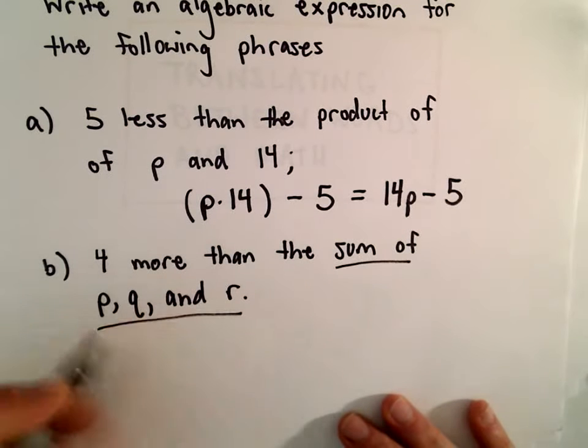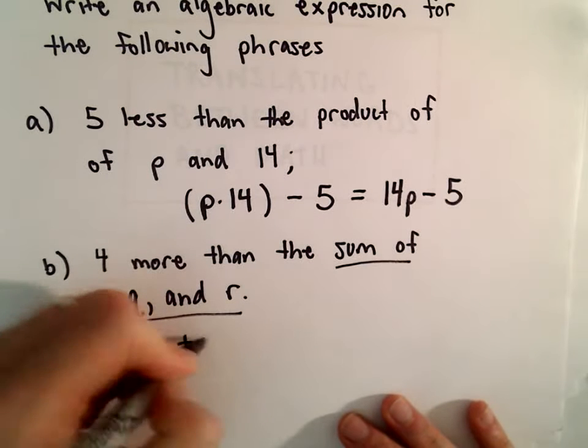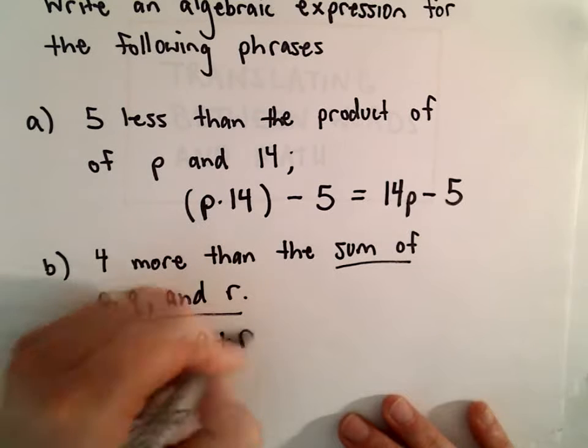The sum of P, Q, and R would just be P plus Q plus R.